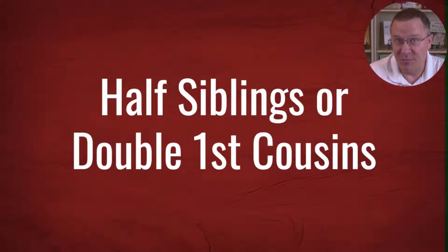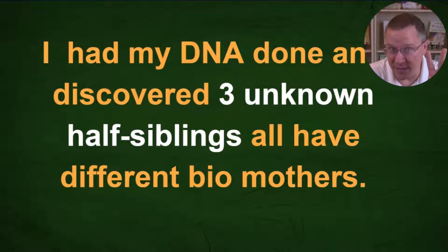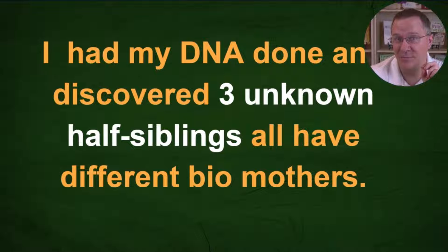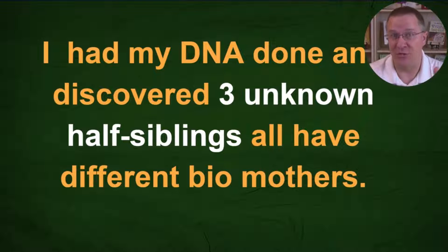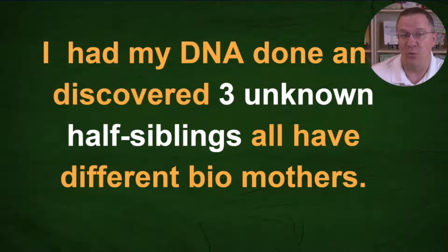We're going to be talking about half siblings or double first cousins. Someone had their DNA done and discovered three unknown half siblings, all having different biological mothers. So we have a father who has had four children from four different women. That's important to remember.